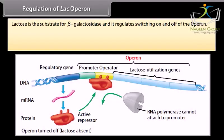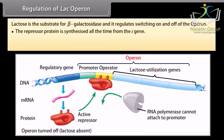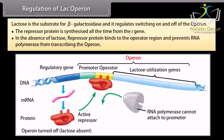Lactose is the substrate for beta-galactosidase and it regulates switching on and off of the operon. When lactose is absent, the repressor protein is synthesized all the time from the I gene. In the absence of lactose, the repressor protein binds to the operator region and prevents RNA polymerase from transcribing the operon.